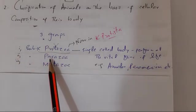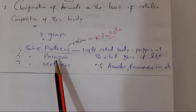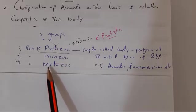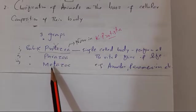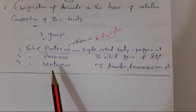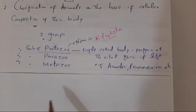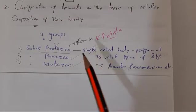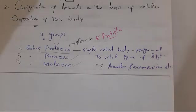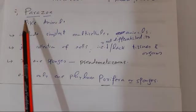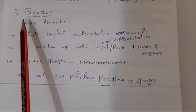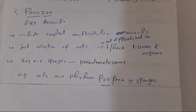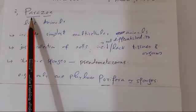Sub-kingdom Parazoa includes the simplest multicellular animals, while sub-kingdom Metazoa are the true multicellular animals. Now in Kingdom Animalia, we study Parazoa — the simplest multicellular animals — and Metazoa — the true multicellular animals. Protozoa, which are now included in Kingdom Protista, are also known as animal-like Protists.